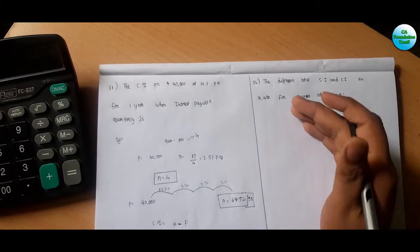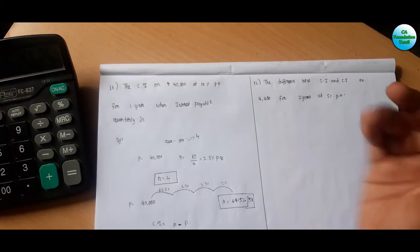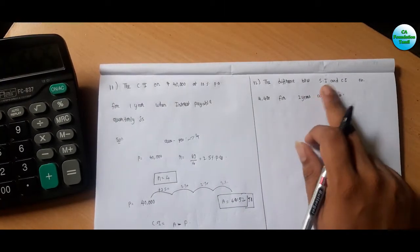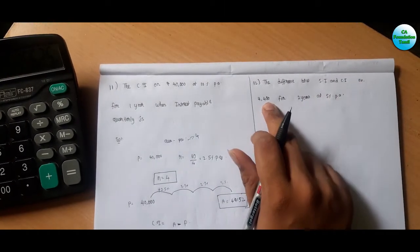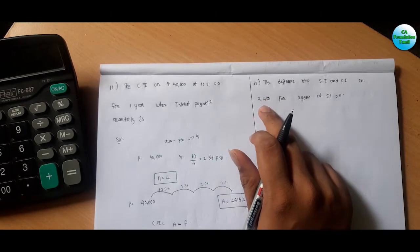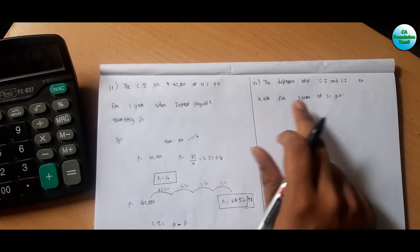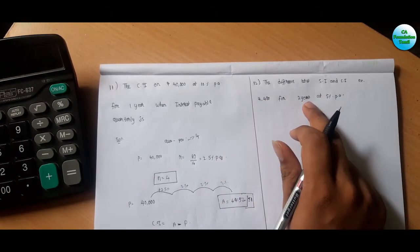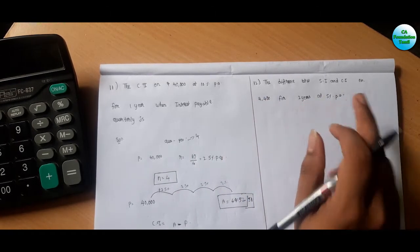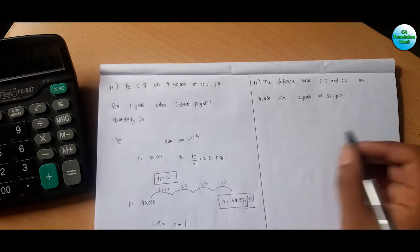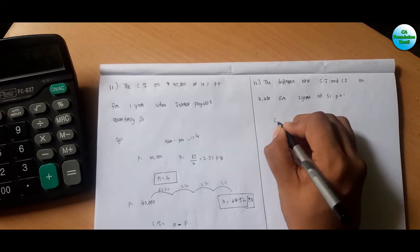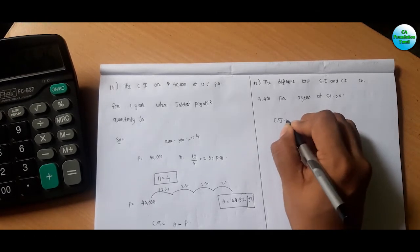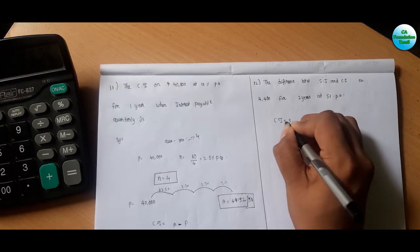So this is option C. Now sum number 12. The difference between CI and SI. Principal 2,400, 2 years, rate of interest 5 percent. Find the difference between CI and SI, so CI minus SI.